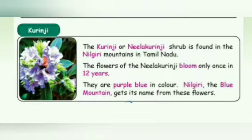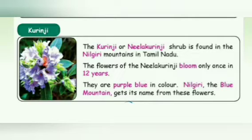The kurunji flower is also called as neelakurinji shrub. This flower is found in the Nilgiris mountains of Tamil Nadu. The neelakurinji will bloom — that is, blossom — only once in 12 years. They are purple-blue in color, and the Nilgiris, meaning 'blue mountains,' gets its name from these flowers. The kurunji flower is very famous in the Nilgiris as it blossoms only once in 12 years.